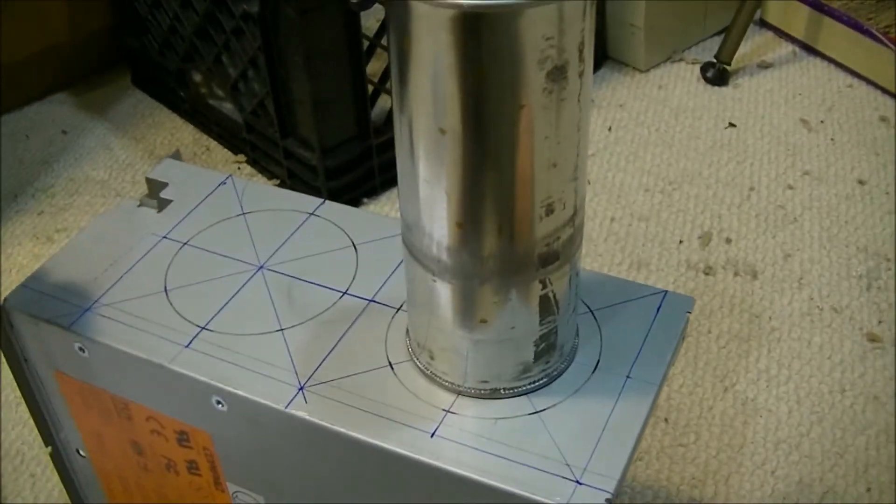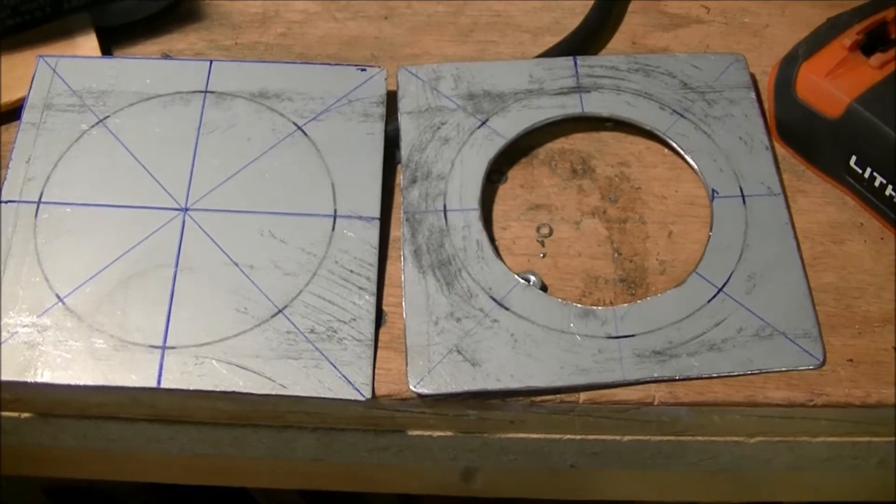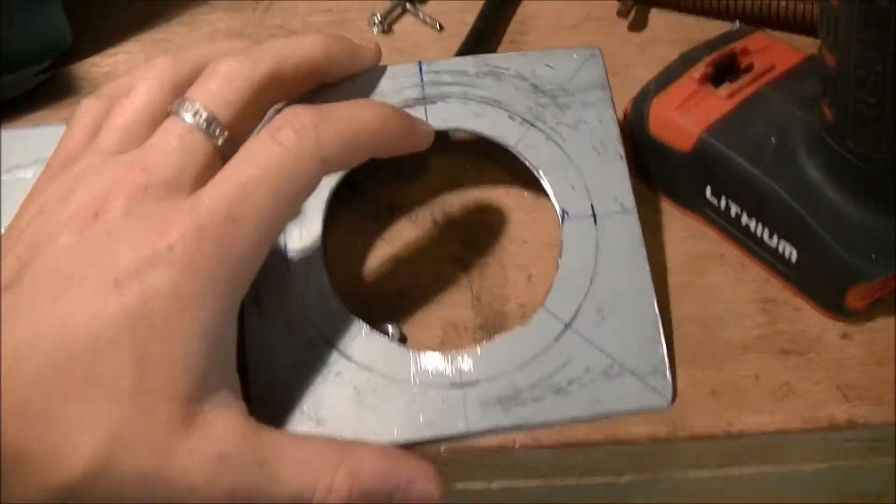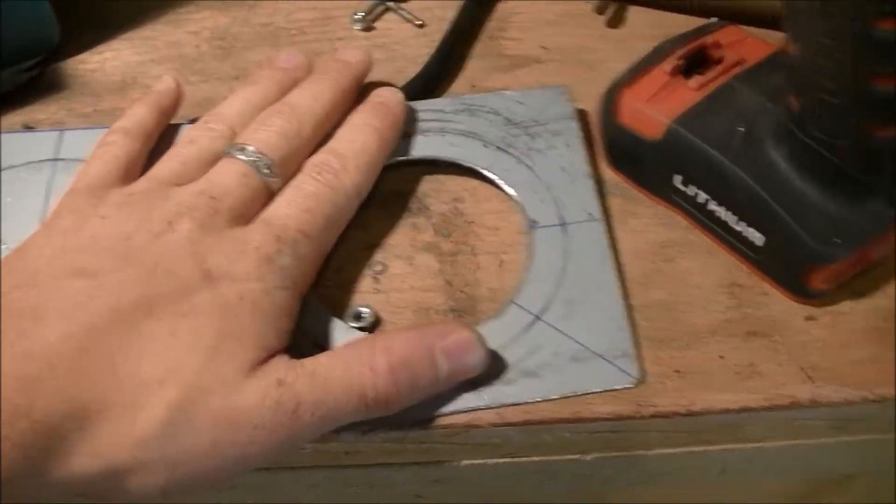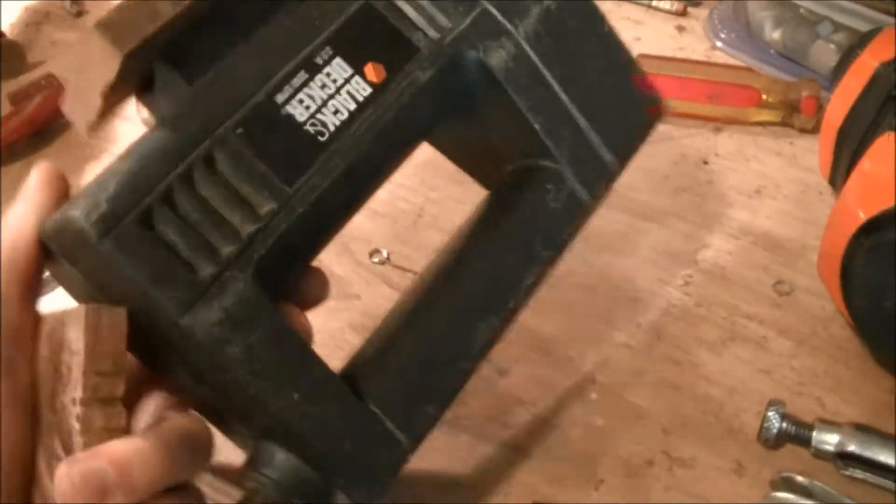Alright guys, so here are the plates all cut out and they were actually way easier to cut than I ever expected. The hole I was planning on actually using a little jig I made to cut a circle with. I cut it with the reciprocating saw, or I call it a saber saw.